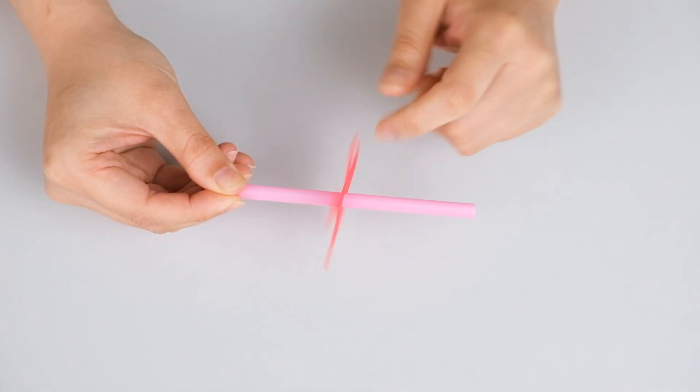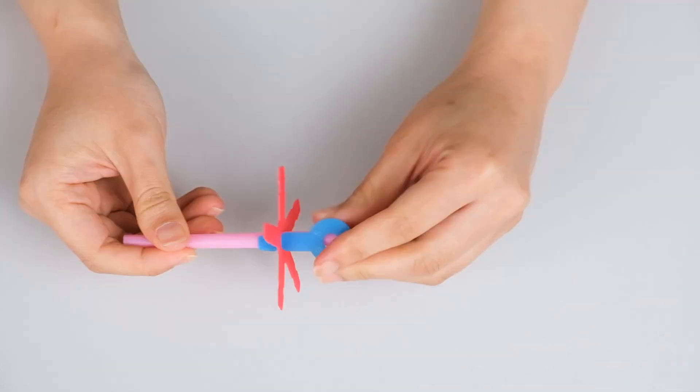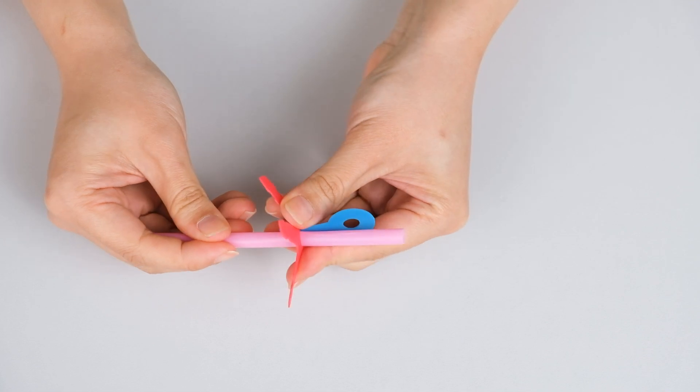A connector can rotate freely on a straw. It can also be locked in place anywhere along the straw, and its position can be adjusted.